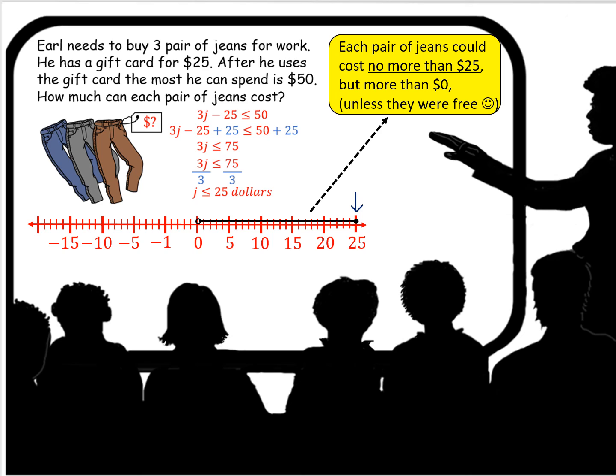But knowing that a price, the jeans, unless they're free, it's going to be greater than $0. So that's why we have the open circle on $0. It's unlikely that the jeans are going to be free. But you never know.